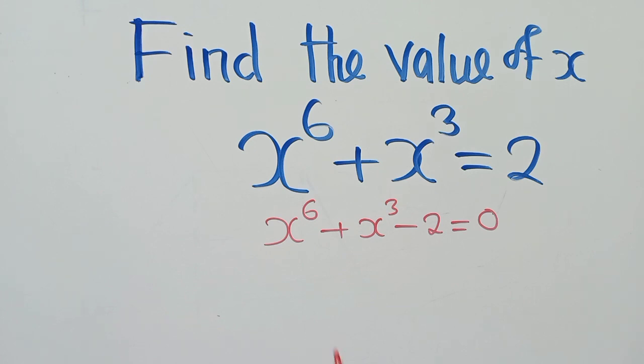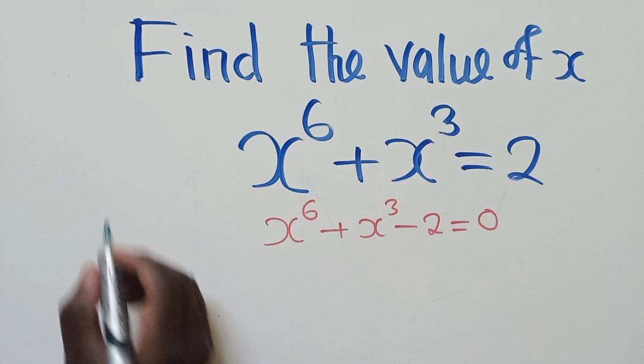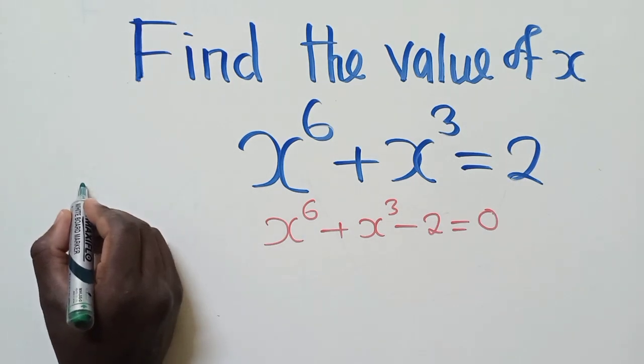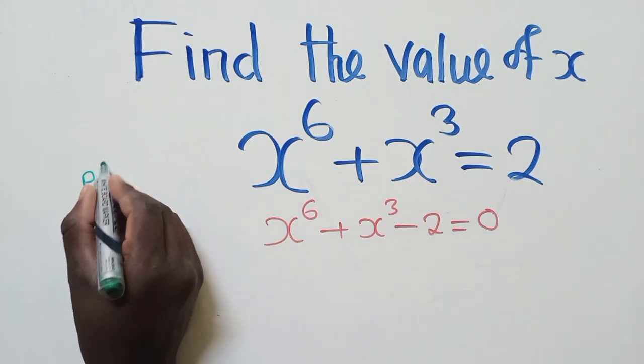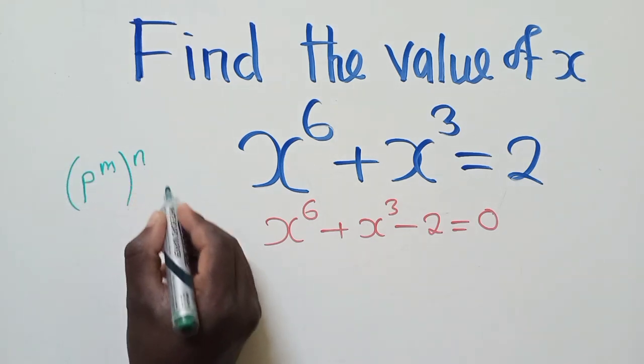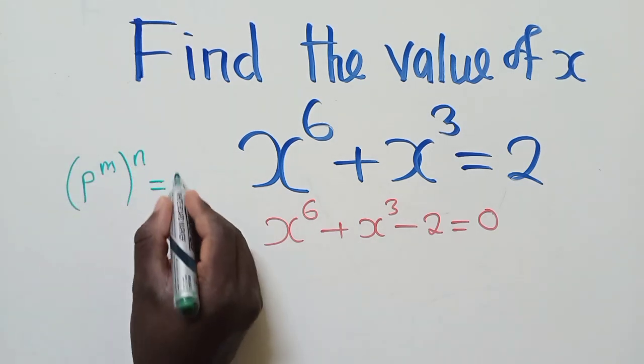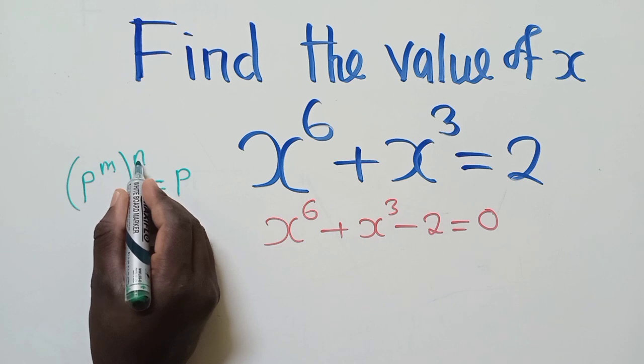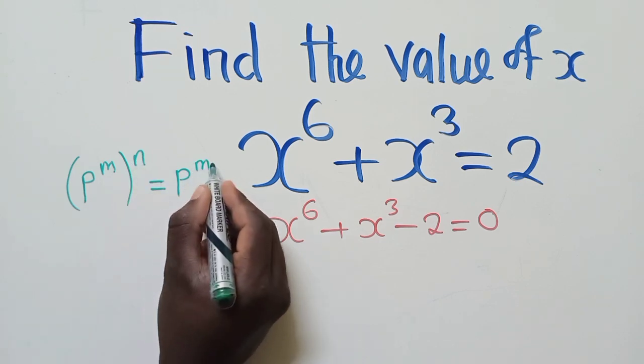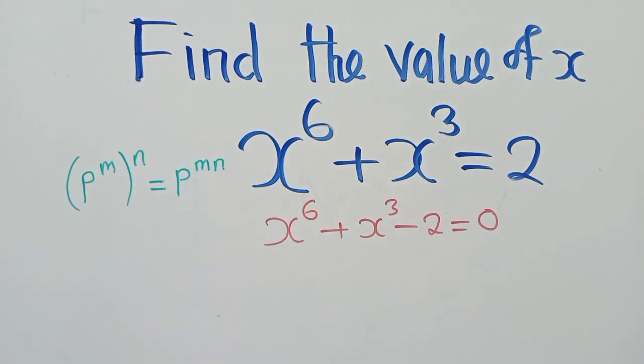So after putting it in standard form, you use the laws of indices. So let me write something here. If you have P to the power M and that power N, what it means is that this power M and this power N must be multiplied and you shall get P to the power MN. So this is the law of indices that we are going to apply.